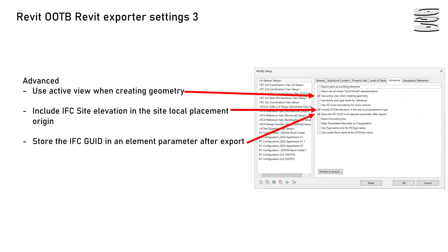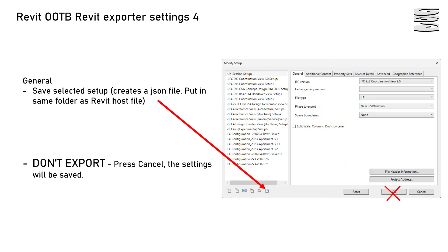The next tab is Advanced. In this case we actually want the active view selected for creating geometry. And then in the other two options we want the IFC data attached to the objects and the website, so we have the GUID information attached there.